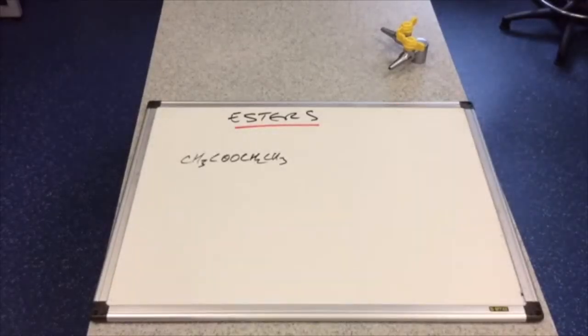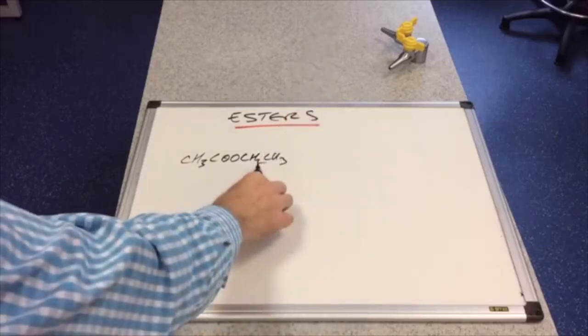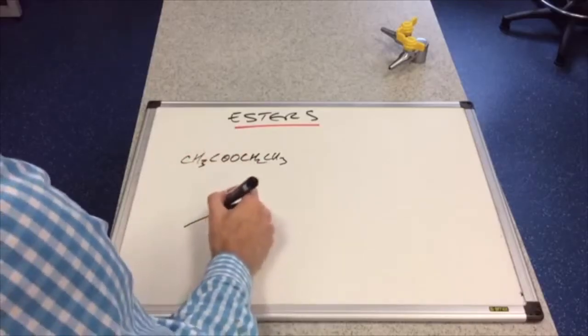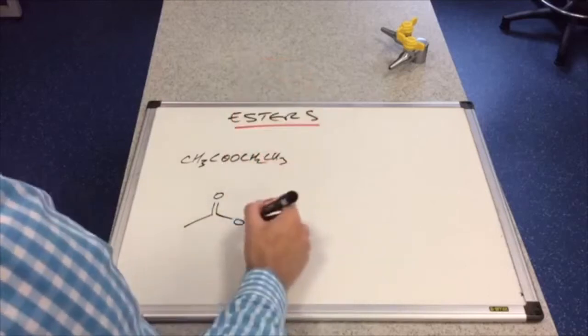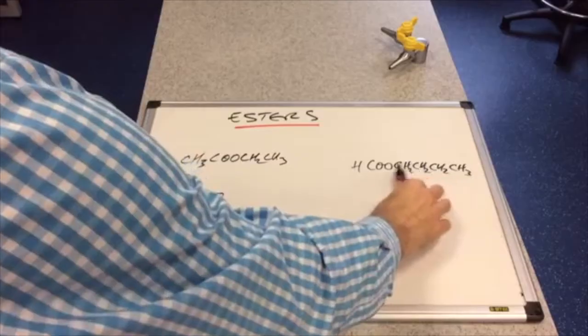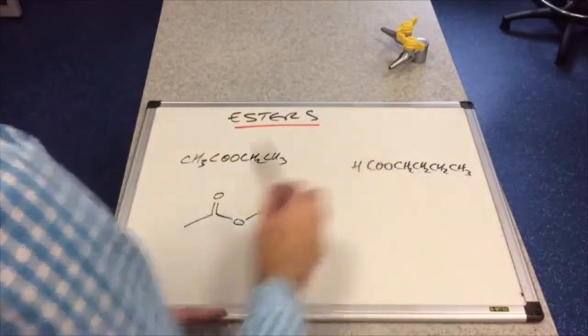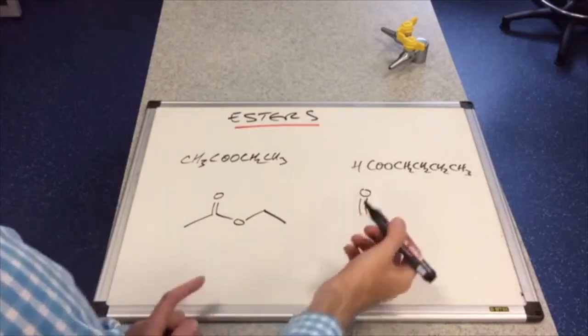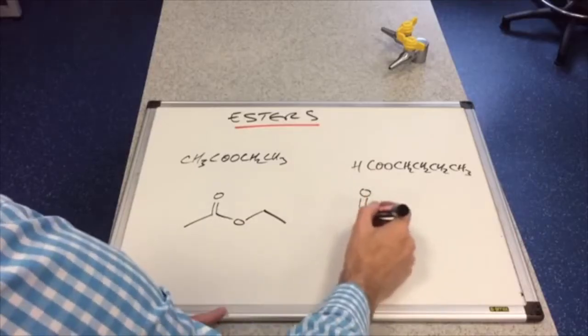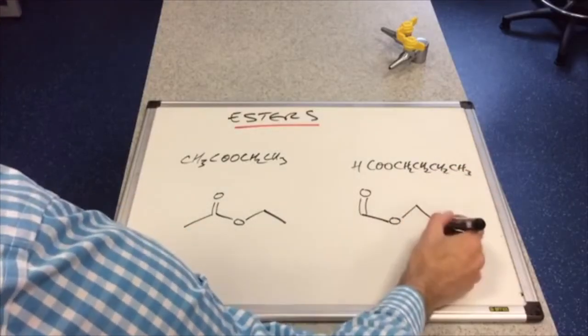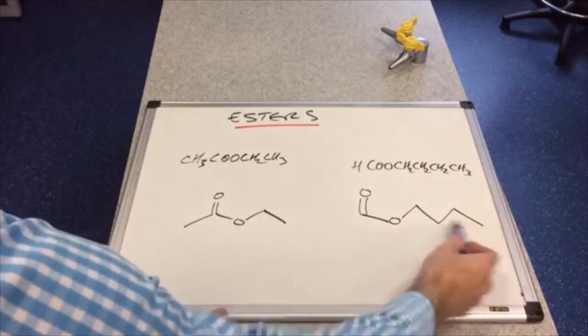We'll just have a quick look at the skeletal formula of esters. So we've got ethyl ethanoate, so we've got the methyl group, C double bond O, single bond O, and then CH2CH3. We'll do one more. So we've got 1, 2, 3, 4, butyl, one carbon methanoate, butyl methanoate. There's an H there but we don't show that on skeletal formula. So C double bond O, single bond O, and then 1, 2, 3, 4. So butyl methanoate.